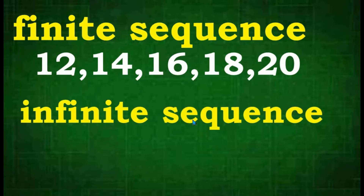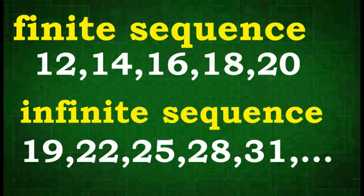The other group is the so-called infinite sequence. This contains an infinite number of terms. For example: 19, 22, 25, 28, 31, and so on. In this sequence, the last term is unknown. This means we cannot determine how many terms we have in this sequence, and it is represented by three dots, which we refer to as ellipsis, meaning there are still a lot of numbers after 31.